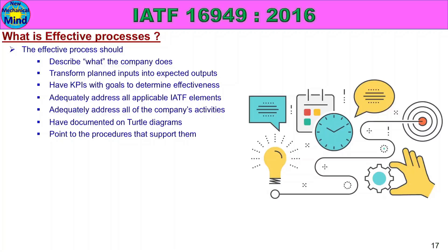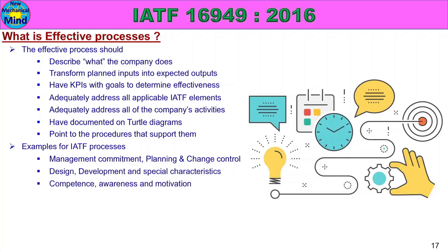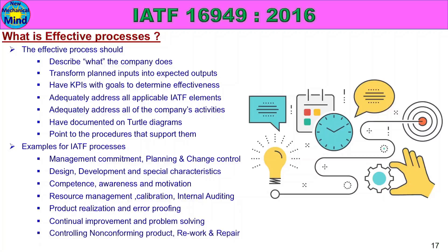Examples of IATF processes include: management commitment, planning and change control, design development and special characteristics, competence awareness and motivation, resource management, calibration, internal auditing, product realization and error proofing, continual improvement and problem solving, controlling non-conforming product, rework and repair, supplier development, and outsource control.